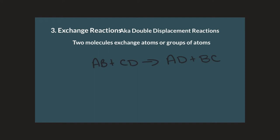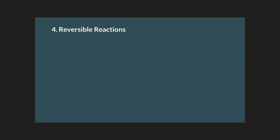The final reaction we're going to talk about are reversible reactions. As you've seen in the other chemical reactions we've discussed, many of them proceed only in one direction, and you can tell that from the way the arrow points. However, reversible reactions can go in either direction under different circumstances. This is represented by a pair of arrows that show the reaction can go in either direction.